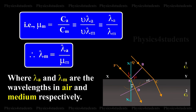This is mu m is equal to Ca by Cm is equal to nu lambda a by nu lambda m is equal to lambda a by lambda m. Therefore, lambda m is equal to lambda a by mu m, where lambda a and lambda m are the wavelengths in air and medium respectively.